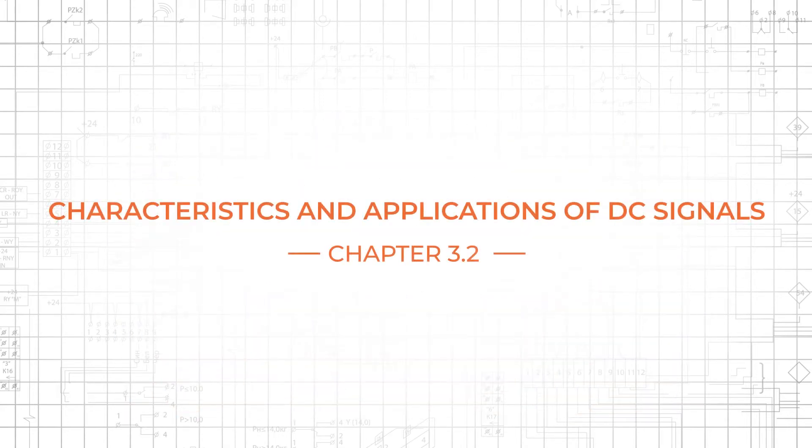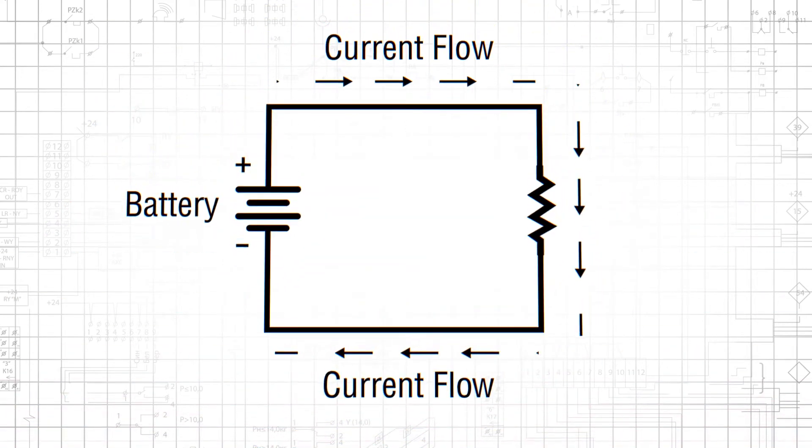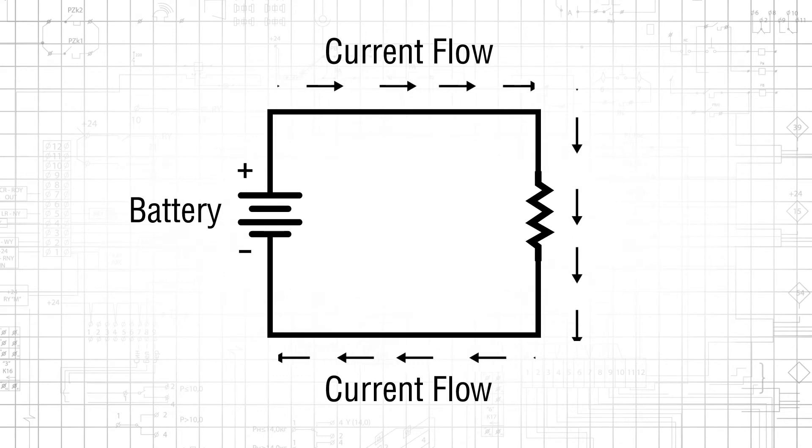The fundamental characteristic of a DC signal is the absence of changes in polarity. If you connect a DC voltage signal to a resistor, the resulting current will always flow in the same direction.